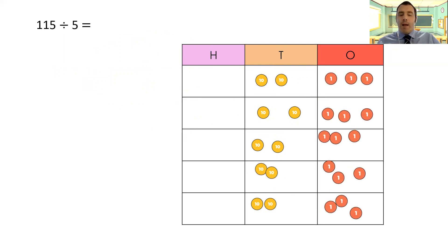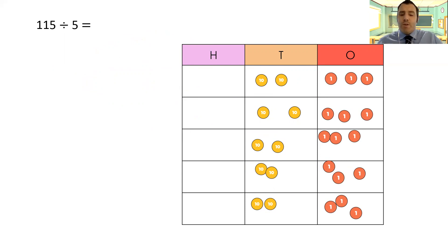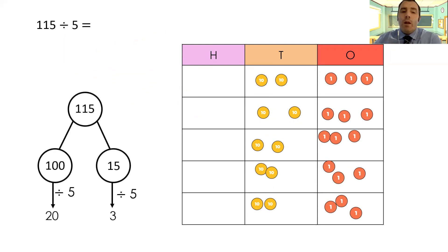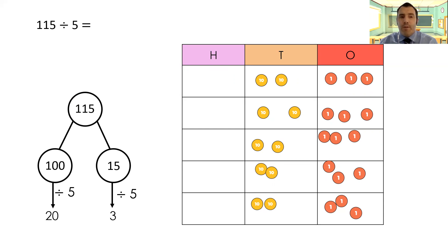All put in. I can look at each row: I've got 23 in the top row, 23 in the second, 23 in the third, 23 in the fourth, 23 in the bottom row. So I've shared it equally between five groups and my answer is 23. Looking at the part-whole model, we've taken 100 divided by 5 to give 20, and 15 divided by 5 to give 3 — add them together for 23.